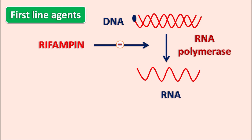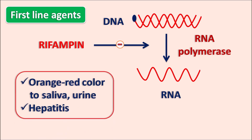Within this class, other drugs like rifabutin and rifapentine can also be used as anti-mycobacterial agents. These rifamycin drugs produce important side effects like orange-red coloration of saliva and urine, because the drug is secreted into various body secretions. Hepatitis is also an important side effect of rifampin and related drugs.